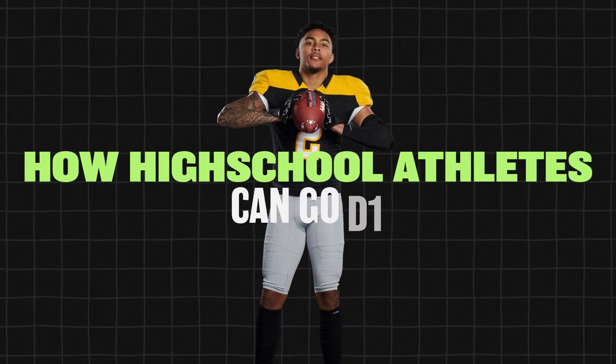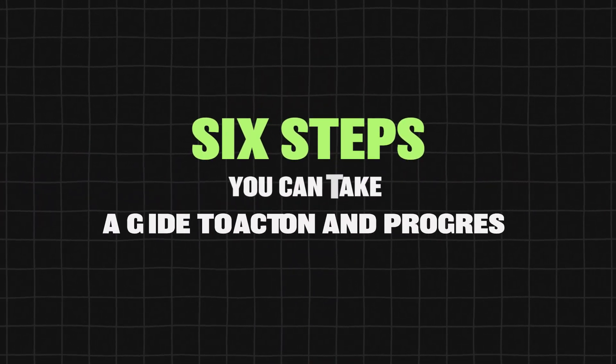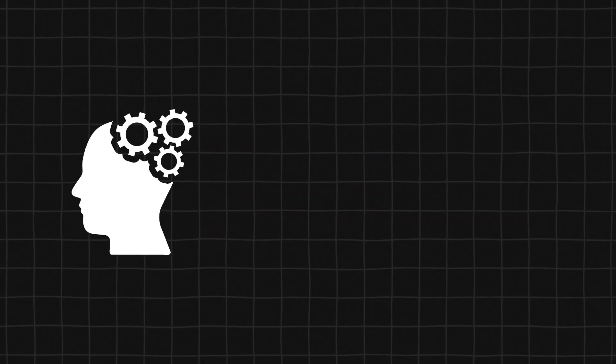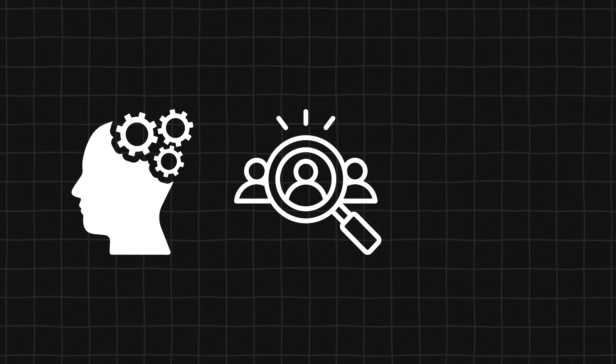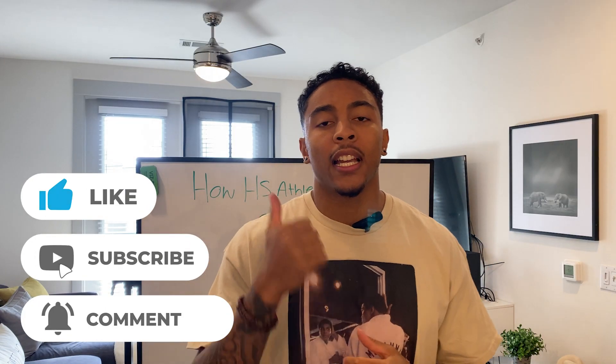What's good YouTube, I'm back with another video. Today I'm going to be talking about how high school athletes can go D1. Specifically in this video I'll be talking through six steps that are really important, whether that be from mindset all the way down to the recruiting aspect, social media, etc. I played football, so I'll be speaking from my experience about being a Division One athlete, but the principles apply for all sports.